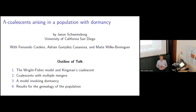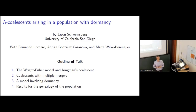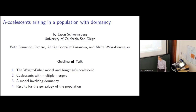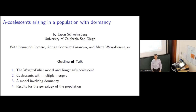I'm going to talk about how lambda coalescence can arise in a population model involving dormancy. I'll begin by introducing the classical Wright-Fisher model and Kingman's coalescent. Then I'll review some known results about coalescence with multiple mergers, or lambda coalescence, which I hope will be useful to those of you who are new to this area. And then I'll describe our population model in which individuals can periodically enter a dormant state. And finally, I'll state our results indicating that coalescence with multiple mergers can sometimes describe the genealogy of this population.